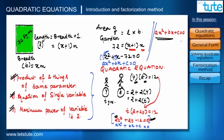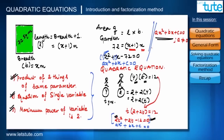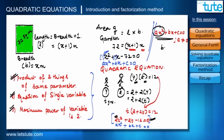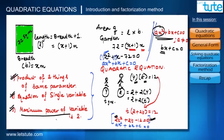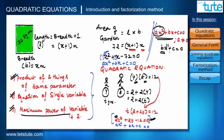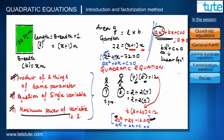One more condition for the general form: a cannot be 0. If a is 0, the whole first term becomes 0, and what remains is bx + c = 0. That equation cannot be called quadratic because the condition that the maximum power of the variable is 2 is not satisfied — the power is only 1. Such an equation is called a linear equation.